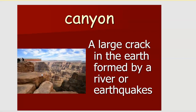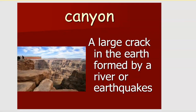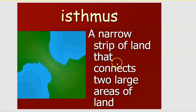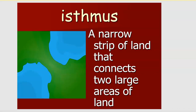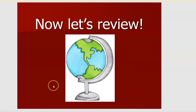What is a canyon? A canyon is a large crack in the earth formed by a river or earthquake. Because of earthquakes or a river, there is a crack in the earth, and that is called a canyon. What is an isthmus? An isthmus is a narrow strip of land that connects two areas of land. This connection between two land areas is called an isthmus.